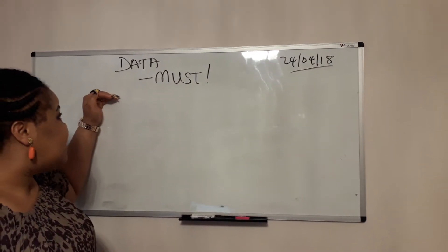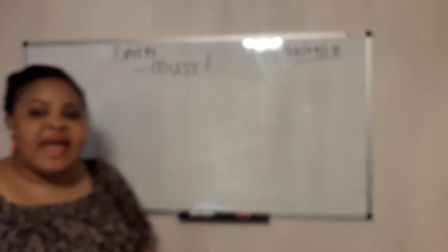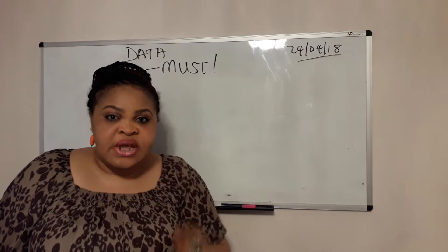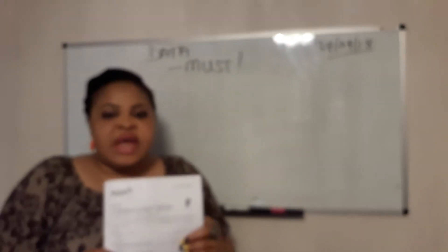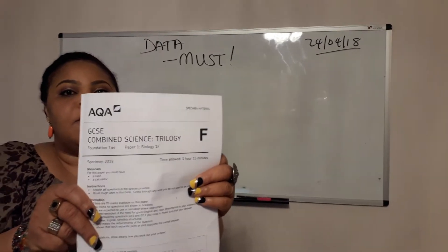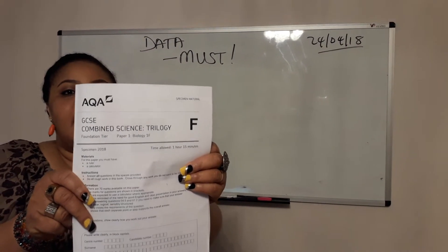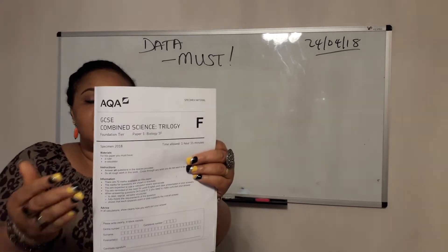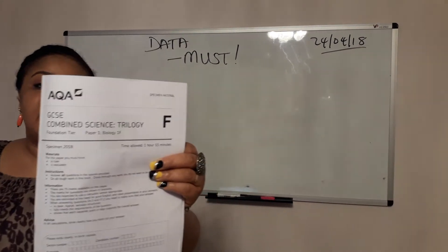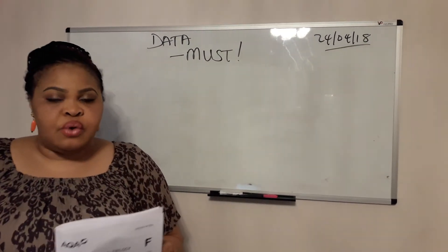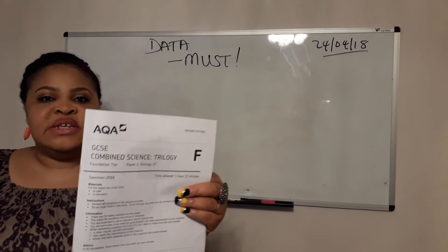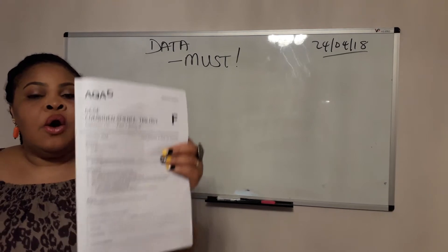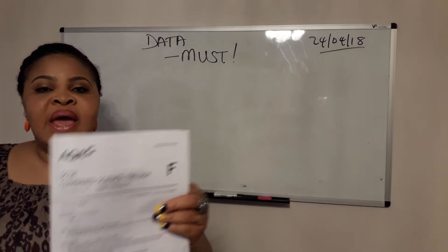I'm using this paper as an example. This is the AQA Combined Trilogy Science assessment paper. For this new GCSE, exam boards have released the assessment materials or resources. This is an AQA Biology paper, the assessment material that has been released.